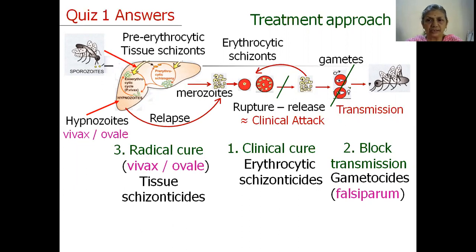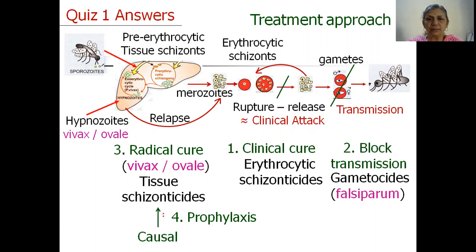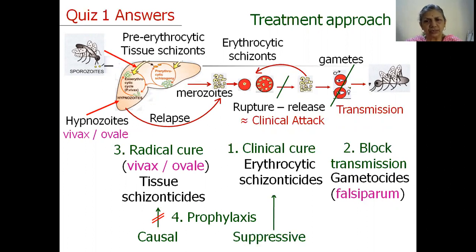The fourth strategy we discussed was prevention of malaria in an individual going to an endemic region. We discussed why causal prophylaxis using a tissue schizonticide throughout the stay is not used, because the tissue schizonticide is not safe for prolonged use. The strategy used for protecting this traveler is suppressive prophylaxis by repeated use of erythrocytic schizonticides throughout the stay, and a little earlier and a little later as well.